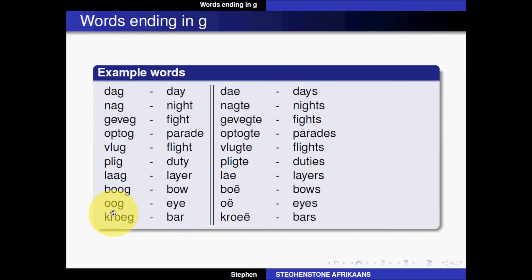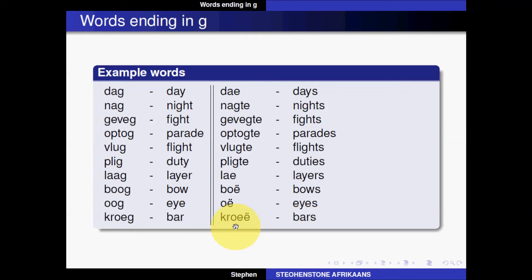The next word is 'eye,' which in Afrikaans is 'oog,' and the plural 'eyes' in Afrikaans is 'oë.' The last one is 'bar,' which in Afrikaans is 'kroeg,' and the plural 'bars' in Afrikaans is 'kroeë.' With 'kroeg,' the 'oe' already makes the 'oo' sound, so the diaeresis splits it into two syllables — 'oo' and 'ë' — giving 'kroeë.'